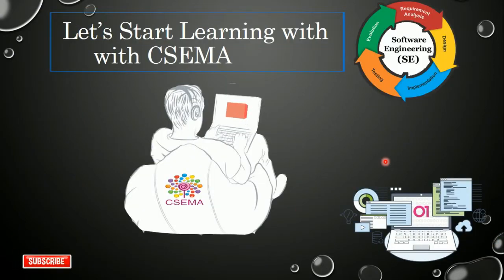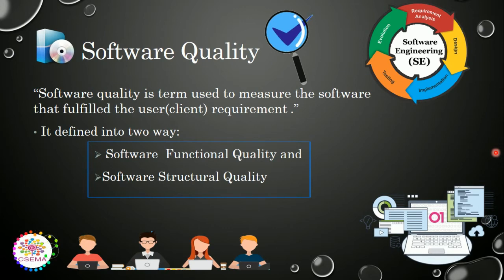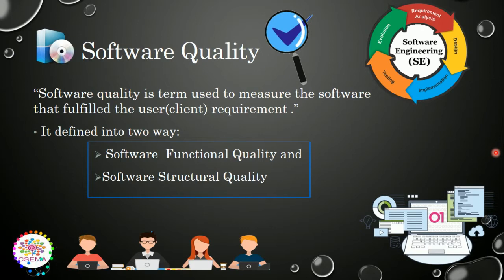If you are not subscribed to CSCMA, please subscribe. Software quality is the term used to measure whether the software fulfills the user or client requirements. Software quality cannot be directly measured; however, it is observed that if there is right quality in the software development process, then the developed product will be a quality product. Software quality is defined in two ways: first, software function quality, which provides the ability about the system — what functions it performs and what quality outputs it produces; and second, software structure quality, which is related to the structure of the system to be developed.